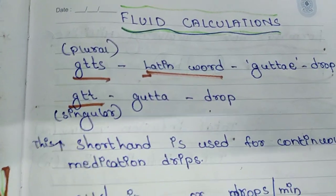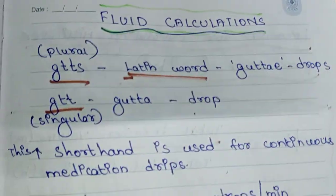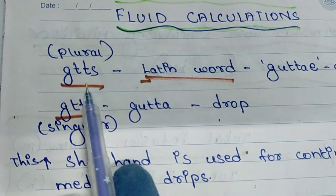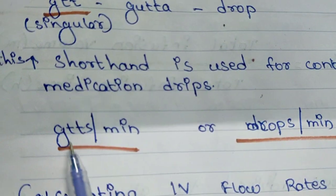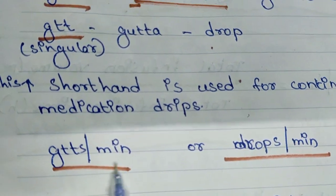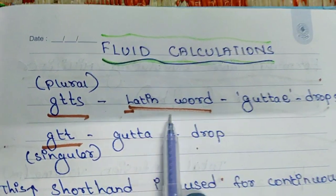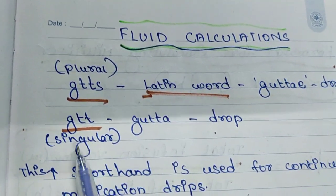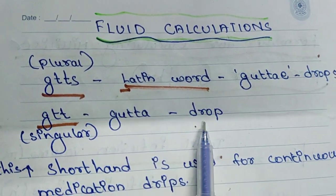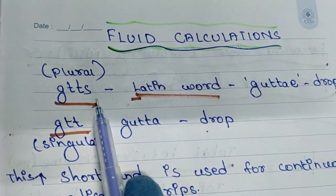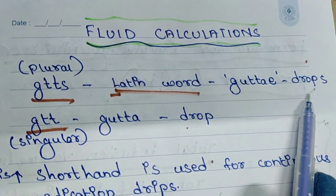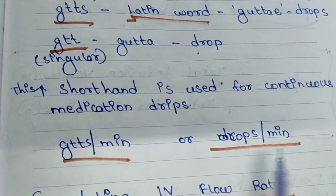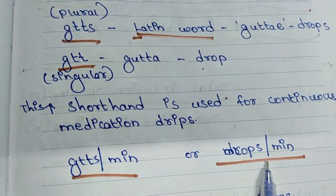Fluid calculations. Before moving ahead, please understand some terms you may come across frequently. GTT and GTTS — you will see GTTS per minute written in prescriptions. GTTS is a Latin word which means 'guttae,' which means drops. GTT is singular, meaning 'gutta' or drop. GTTS is plural, meaning drops. So GTTS per minute is nothing but drops per minute.